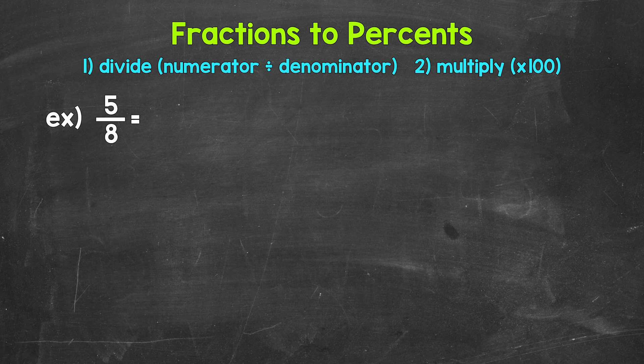When we convert a fraction to a percent, we can start by dividing the numerator, the top number of the fraction, by the denominator, the bottom number of the fraction. This will give us a decimal. Once we have that decimal, we convert it to a percent by multiplying it by 100. A quick way to multiply by 100 is to move the decimal twice to the right.